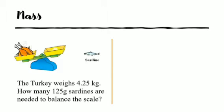We can see the turkey weighing 4.25 kilograms and the sardine weighs 125 grams. Clearly, we are using two different units. So to evaluate this problem, we need to convert either the grams to the kilograms or the kilograms to grams. Let us convert the kilograms to grams.